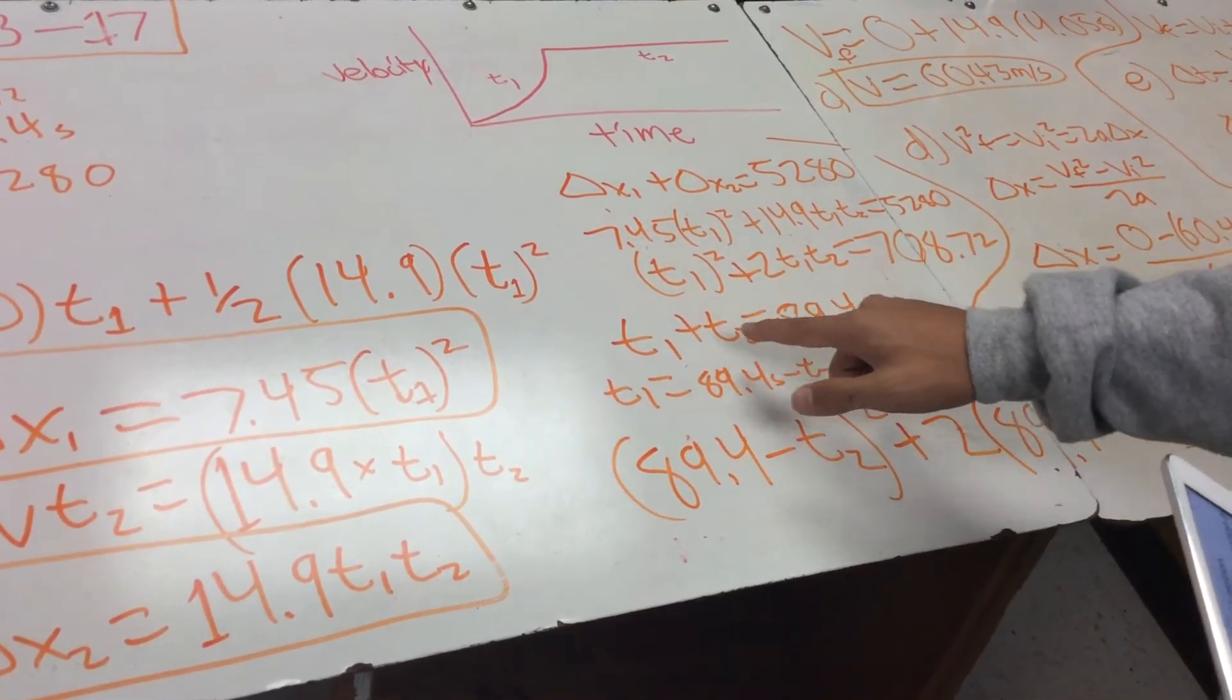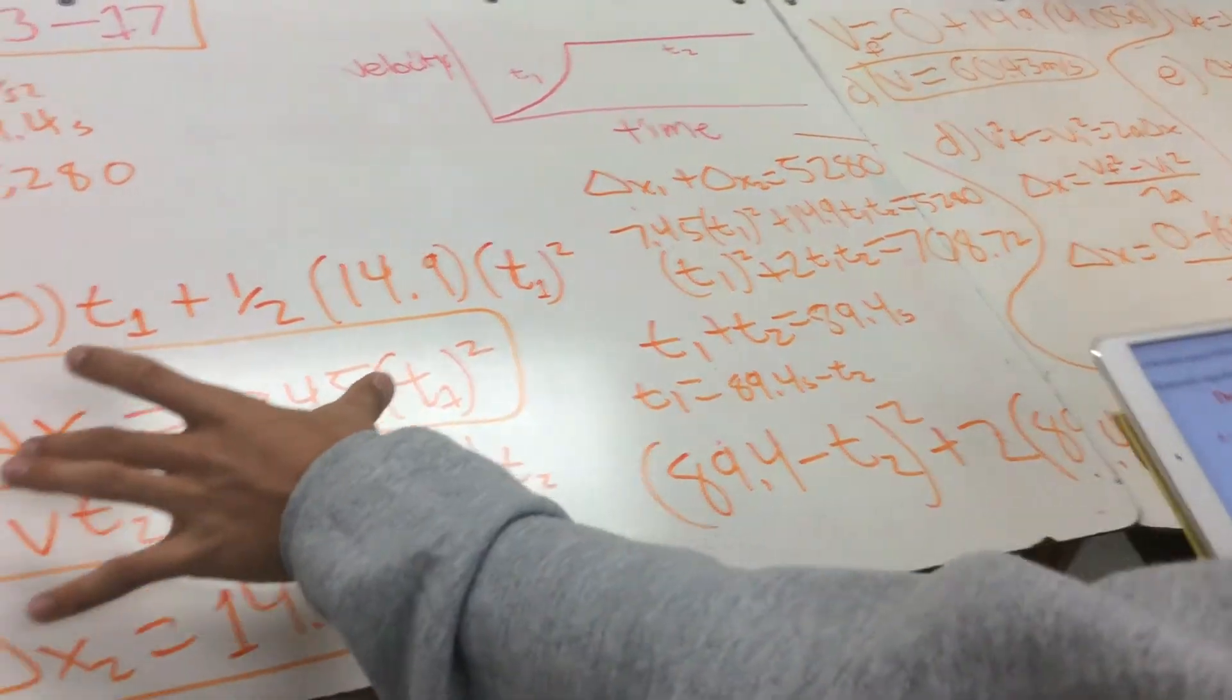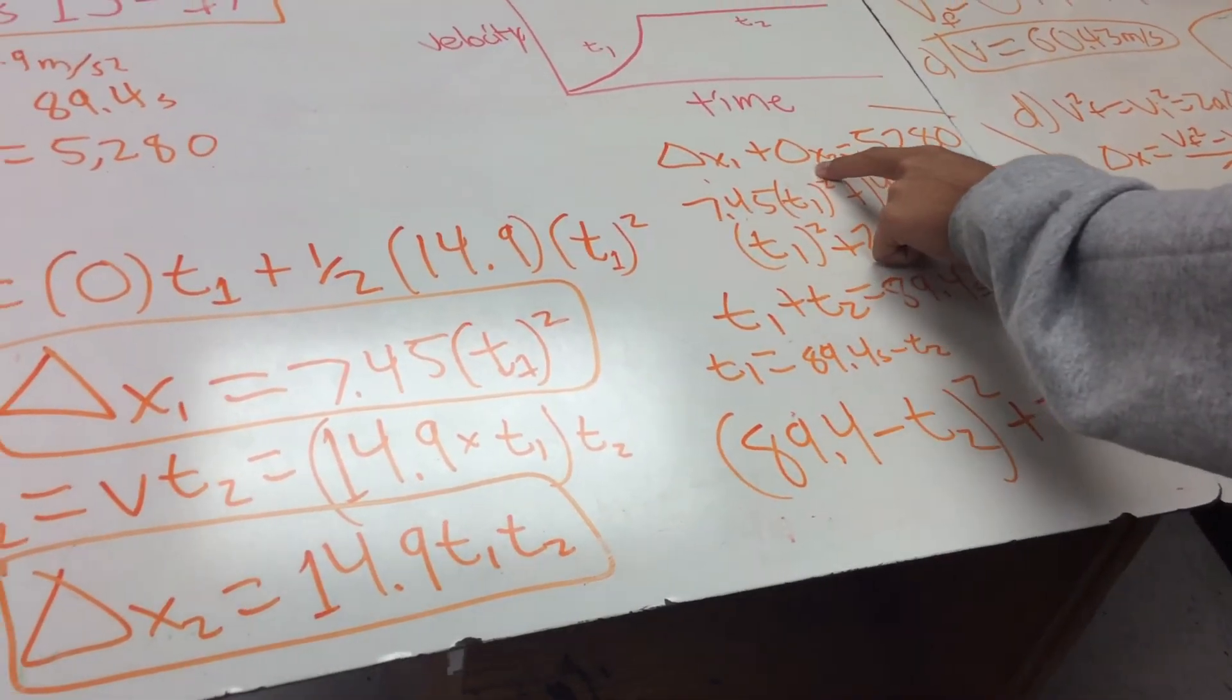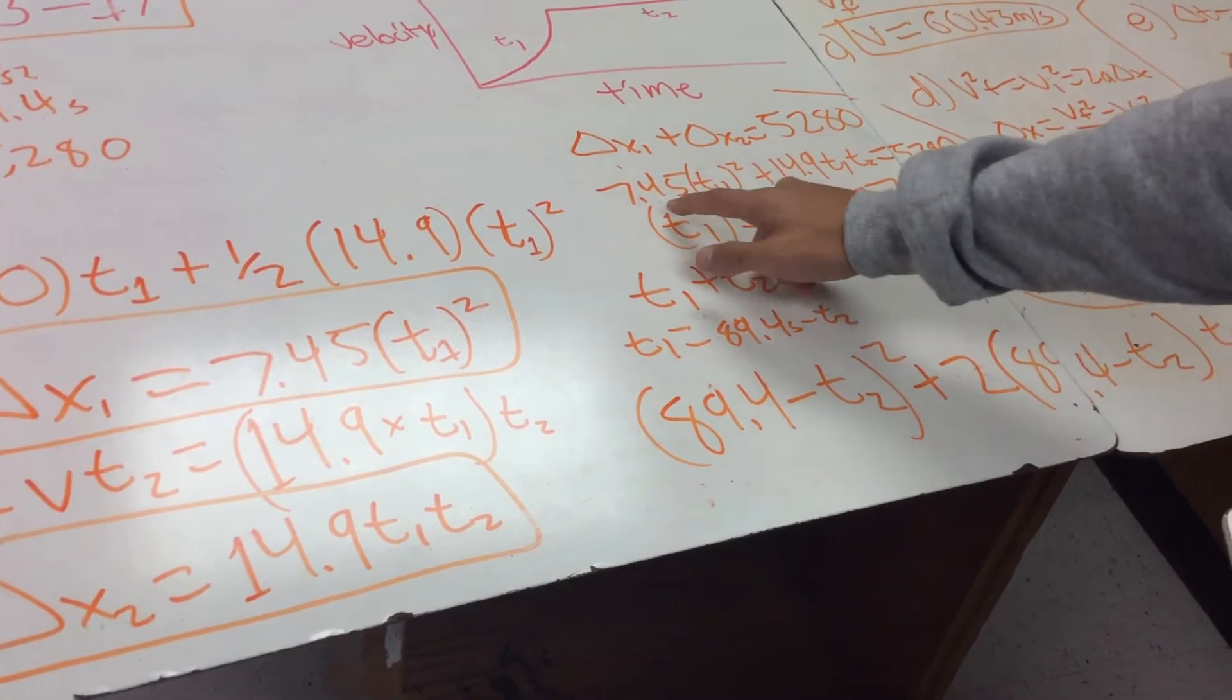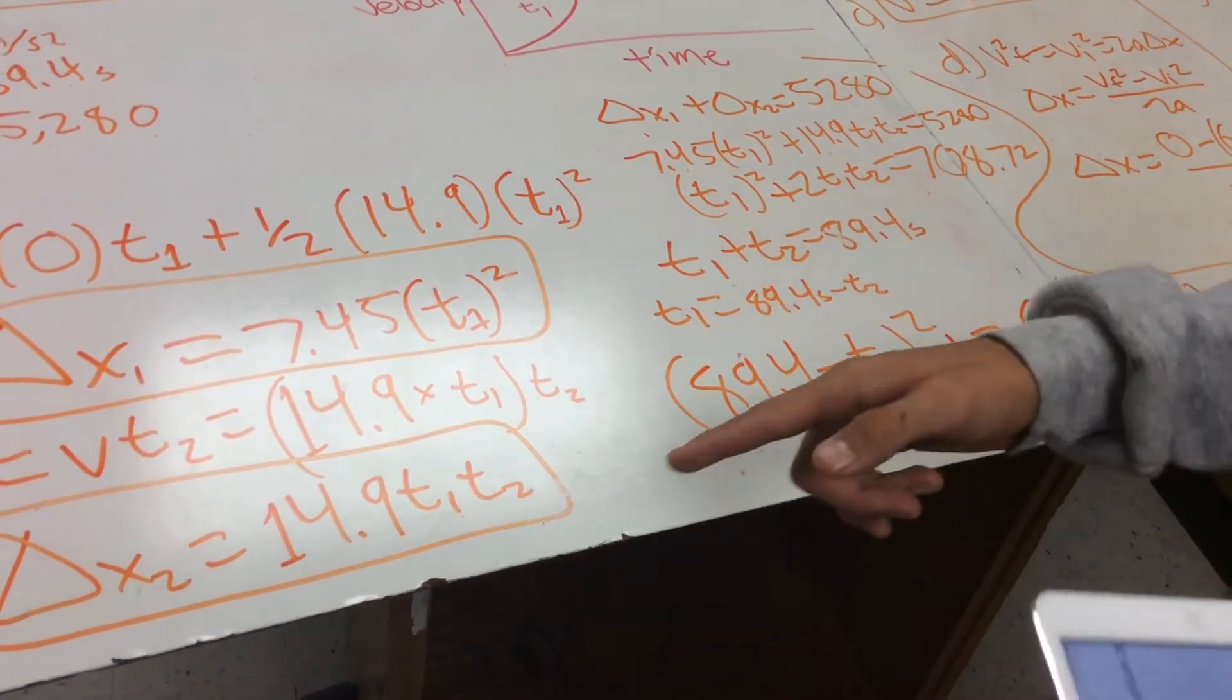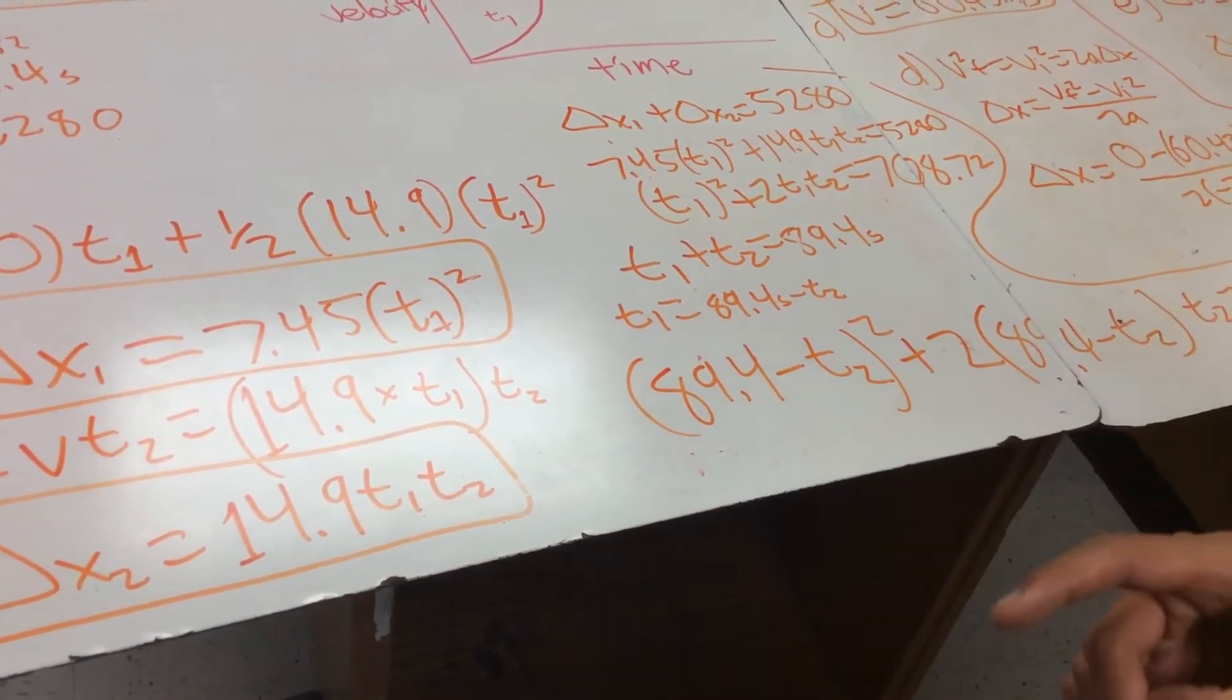So basically what you're going to do is, with this equation right here, you're going to plug in these two chunks, this chunk for this part, and this chunk for that part. And you'll get this big equation right here, just plugging in these chunks. And since you have two variables, t1 and t2, you only need one variable to solve it.